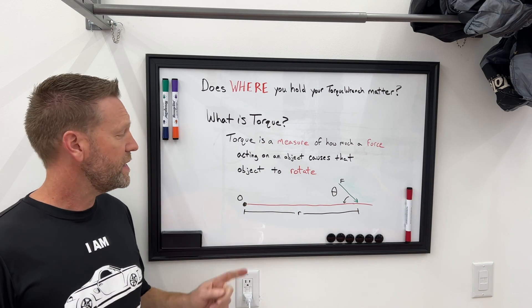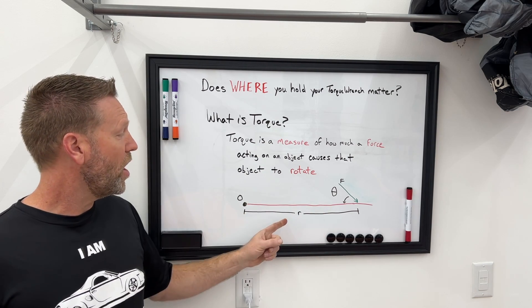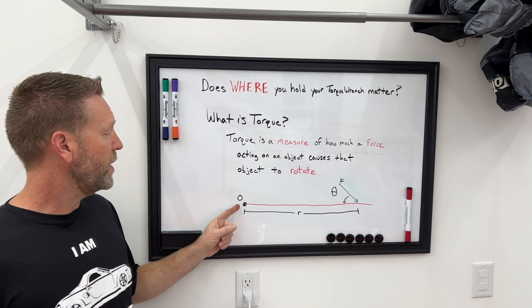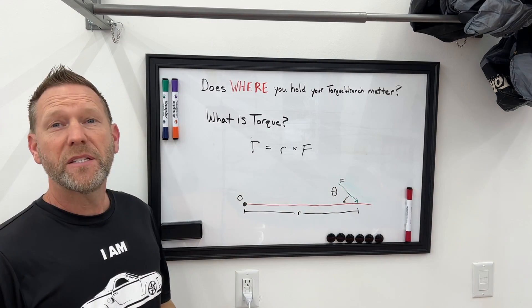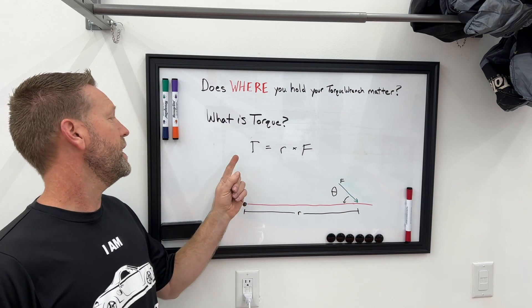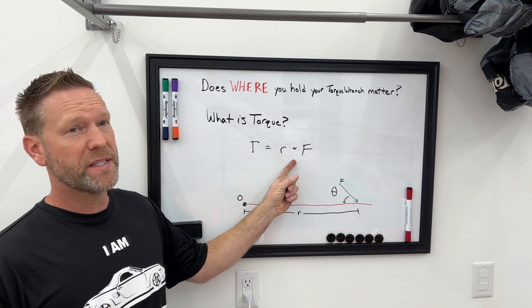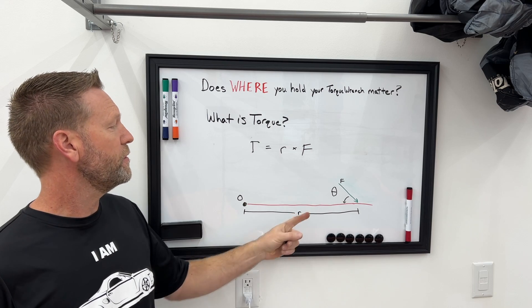Now you might remember from math class that this distance, R, is a vector that is pointing from the object away towards where the force is applied. So in all of our simplified math diagrams that we've seen, torque equals R times F, or the distance times the force.